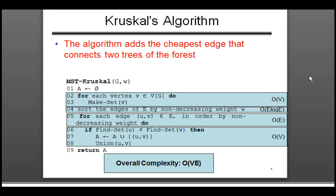Today we're going to be talking about Kruskal's algorithm, which is another form of greedy algorithm and is a continuation of the minimum spanning tree algorithms like Prim's algorithm that we've studied before. Kruskal's algorithm uses a disjoint set data structure, which is different from the kind of data structures we usually use like arrays and linked lists.